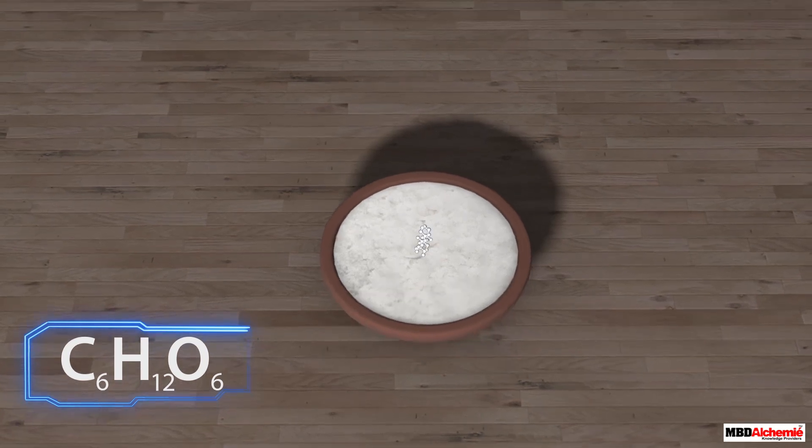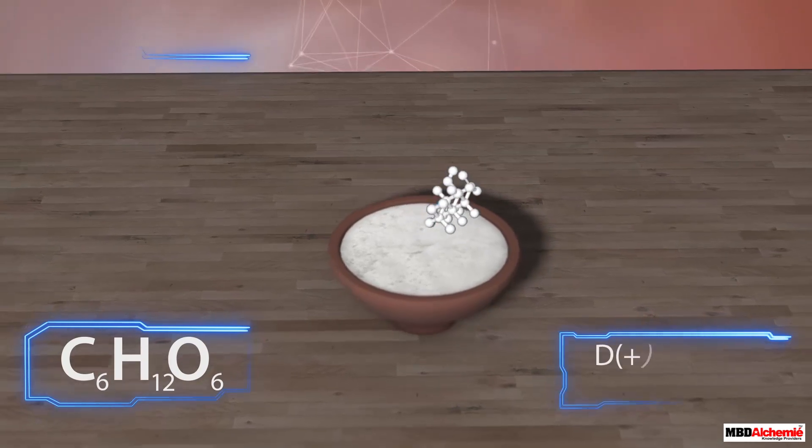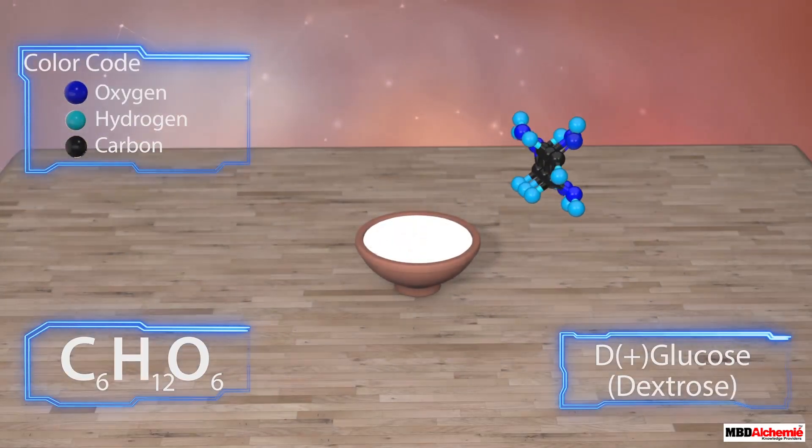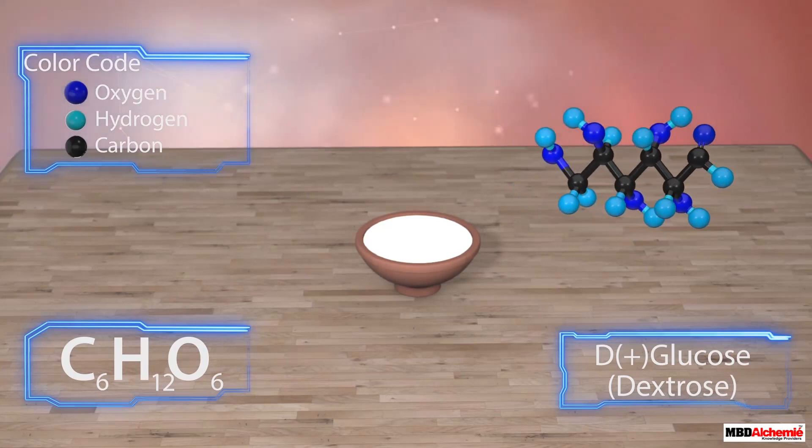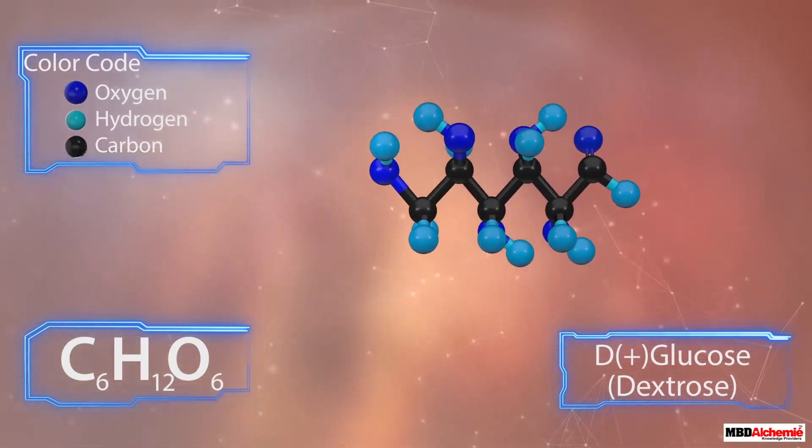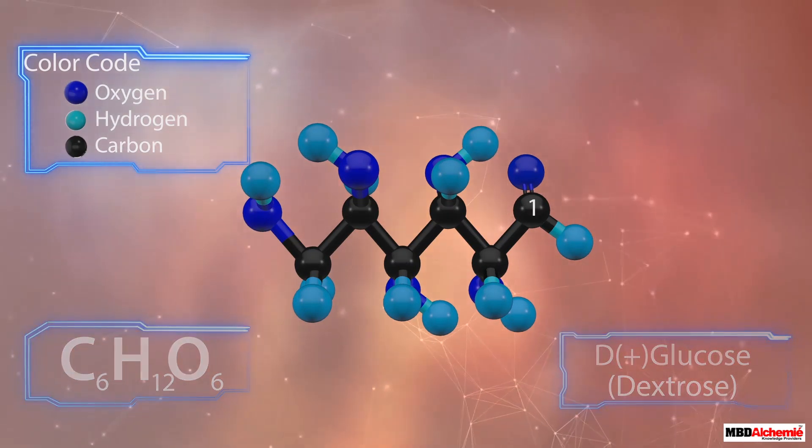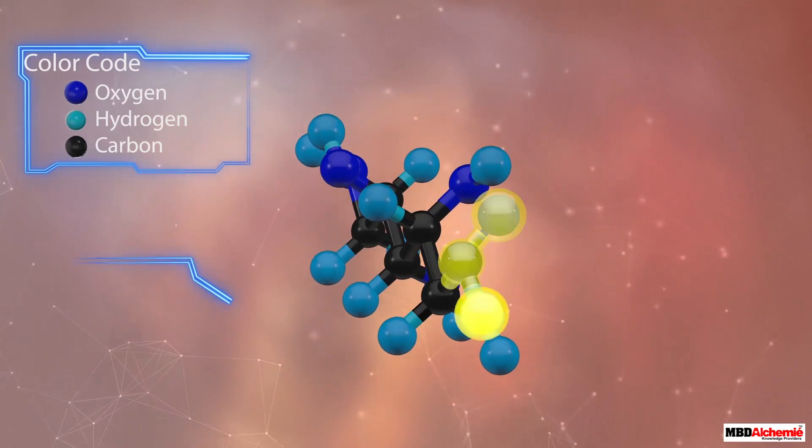Its correct name is D-plus-glucose, also called dextrose. A molecule of dextrose has an open chain structure as shown. It has a chain of six carbon atoms in which the first carbon atom has an aldehyde group.